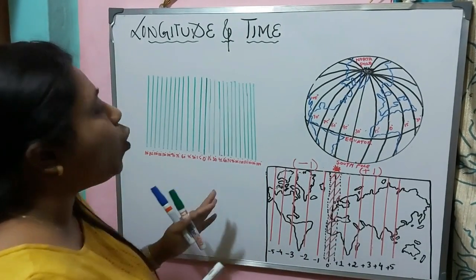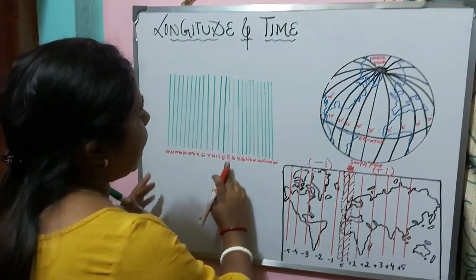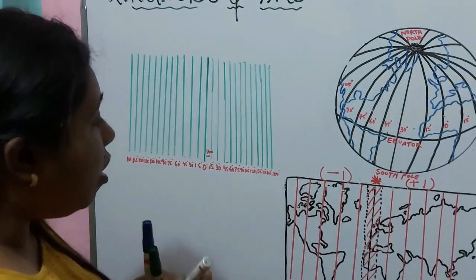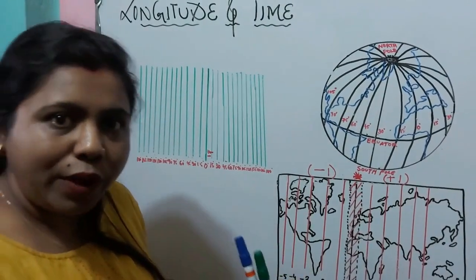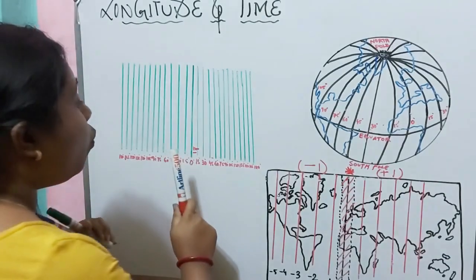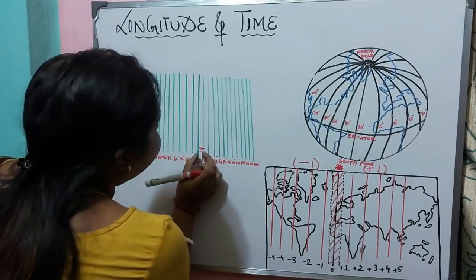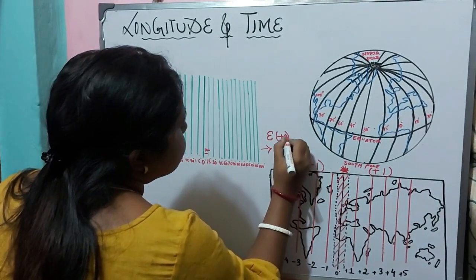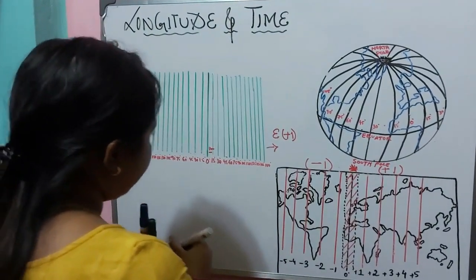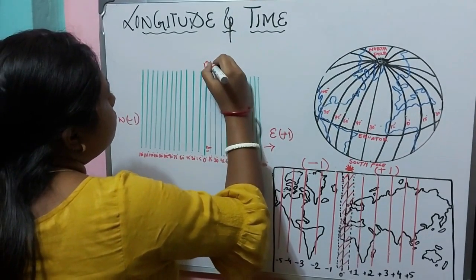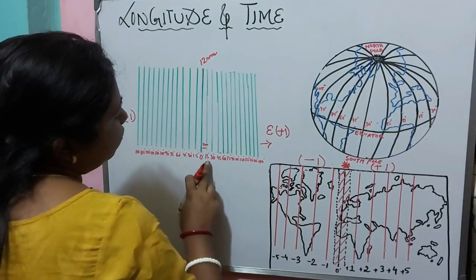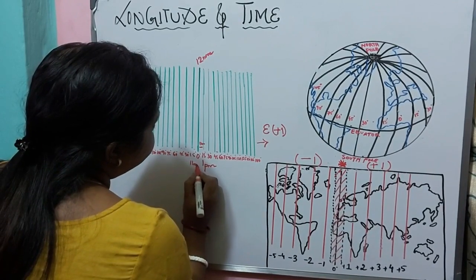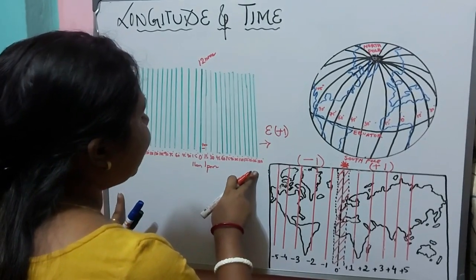Our Earth is divided into 24 time zones. The longitudes are located at 15-degree intervals, and 15 degrees means 1 hour — the Earth takes 1 hour to complete 15 degrees. In the east, 1 hour is added, and in the west, 1 hour is subtracted. So if it is 12 noon at Greenwich, at 15 degrees east it will be 1 pm, at 15 degrees west it will be 11 am, and at 180 degrees it will be midnight.